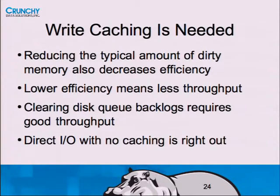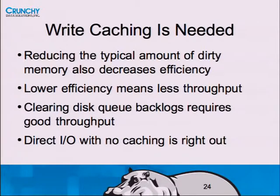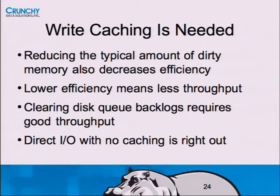If you try to defeat this by getting less dirty memory in the system, it doesn't really work because efficiency drops - you get less of all these benefits, and when you get a backlog you can't get through it. Similarly, some people think 'why doesn't Postgres just use direct IO and schedule all the writes itself?' The model that Postgres uses for writes expects the operating system caching to be there. If you take it out, things become absolutely terrible - where I'm showing 2-4 second latency, switching to direct IO can make that jump to 40-60 seconds instead.